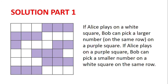Solution. Consider a colouring of the square as shown. If Alice puts a number on a white square, Bob can choose a larger number and write it on that same row on a purple square. If Alice plays on a purple square, Bob can choose a smaller number on a white square and write it on that same row.